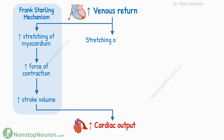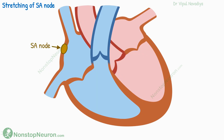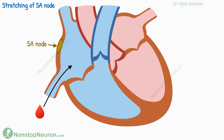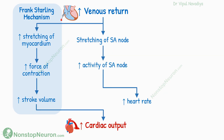The second mechanism is direct stretching of the SA node. The SA node is located in the wall of the right atrium. So when increased venous return stretches the atrial wall, the SA node is also stretched simultaneously. This stretching itself increases the activity of the SA node by an intrinsic mechanism, so the heart rate increases, which increases cardiac output. This is how direct stretching of the SA node increases cardiac output.